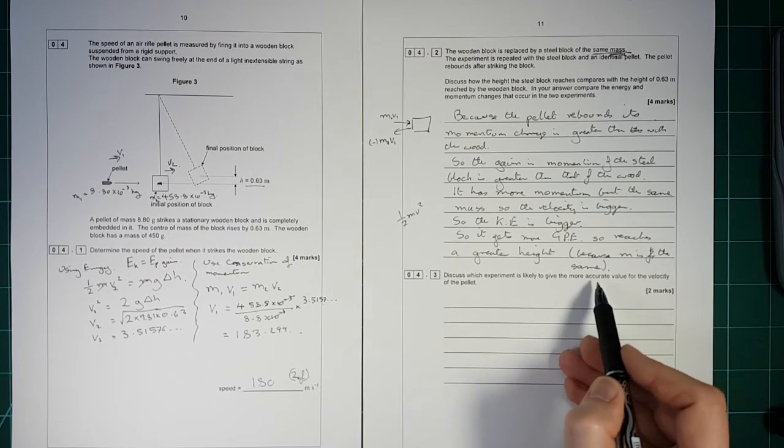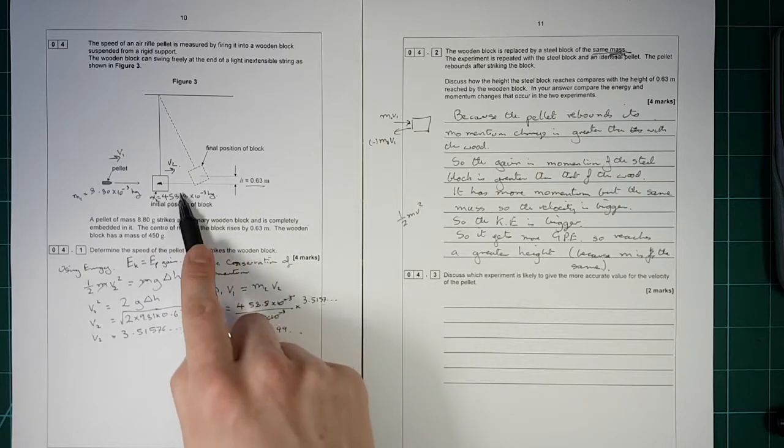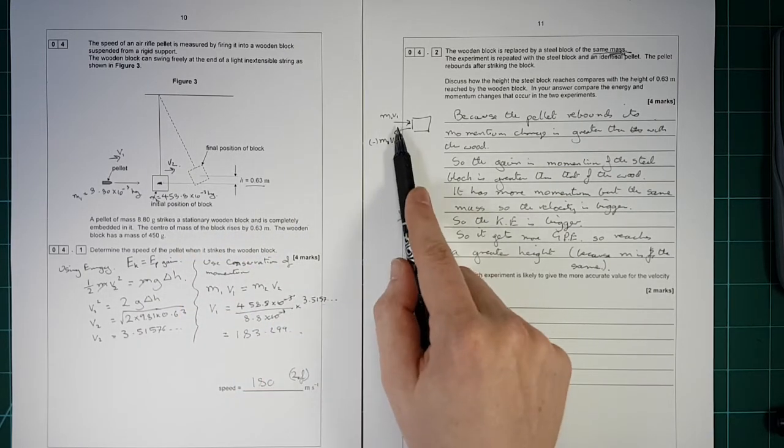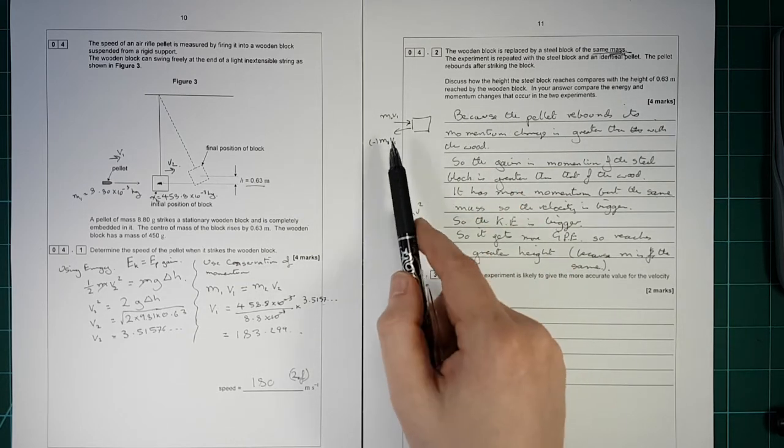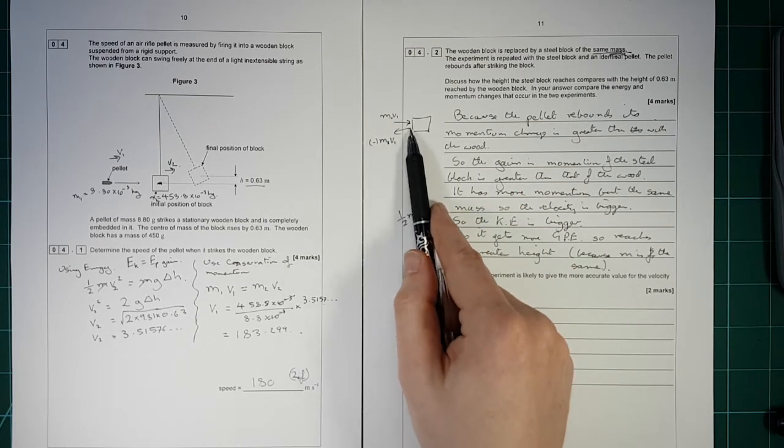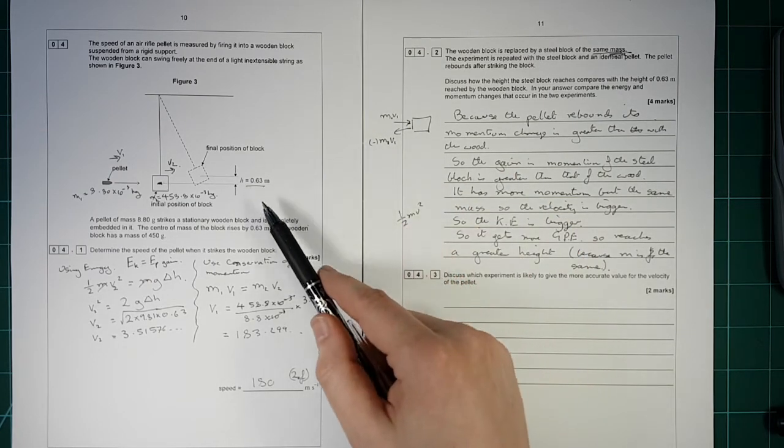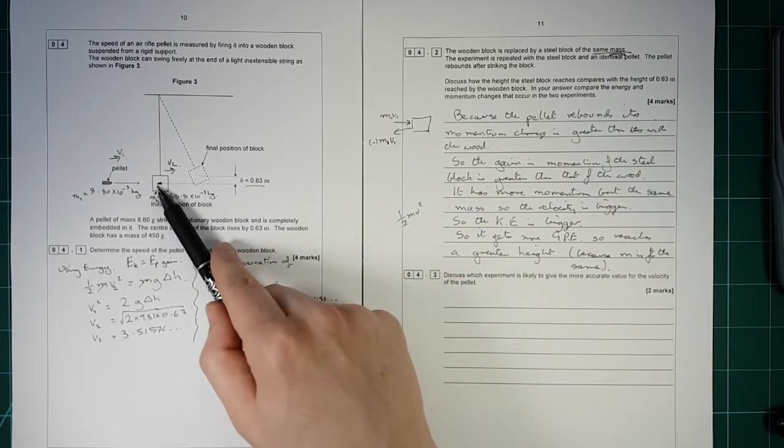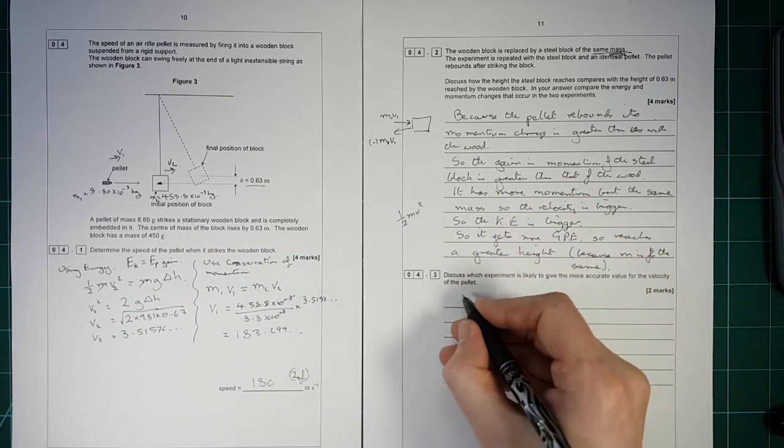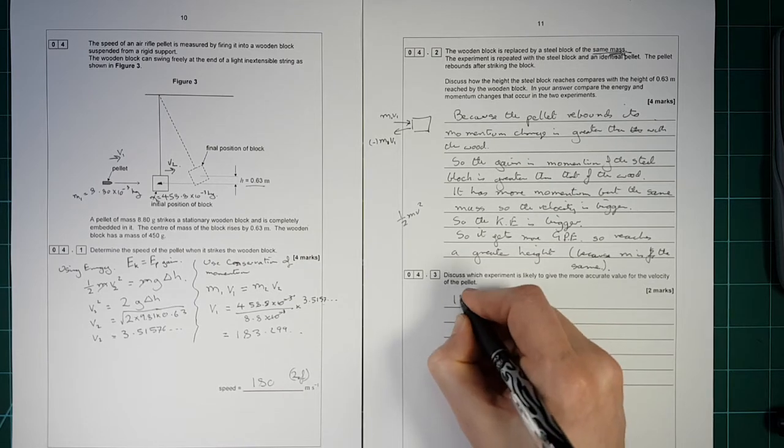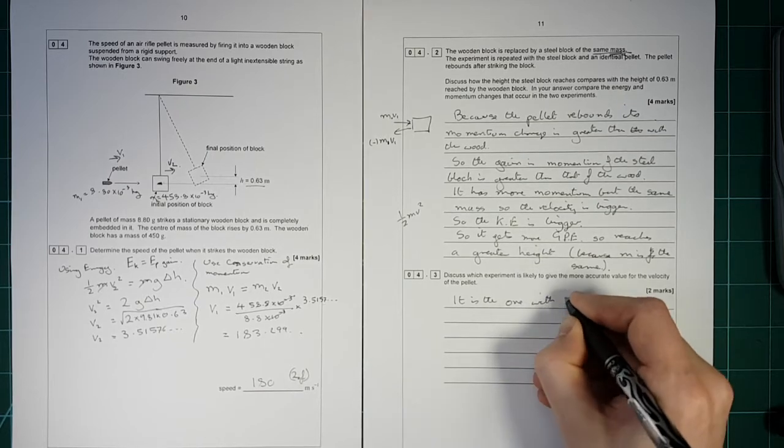Discuss which experiment is likely to give more accurate value for the velocity of the pellet. Well, it's going to be this one, the one with the wood, because although we can assume that this pellet bounces off with the same velocity it went in, it won't do. It's not going to be perfectly elastic, the collision there. So this is the only one we can work out, because we know the velocity of the pellet afterwards.